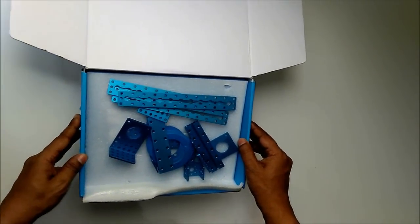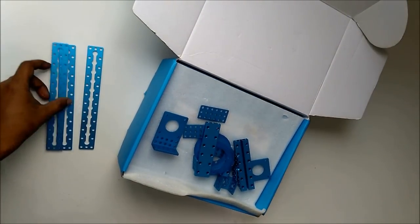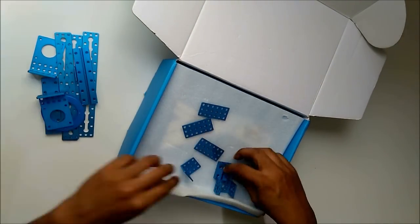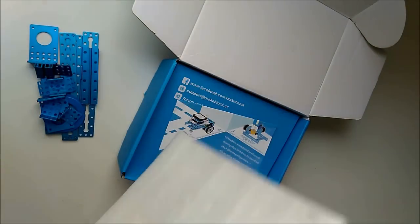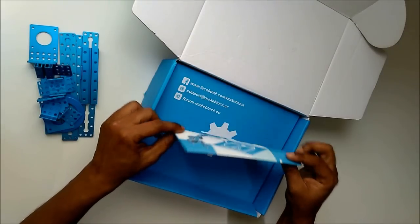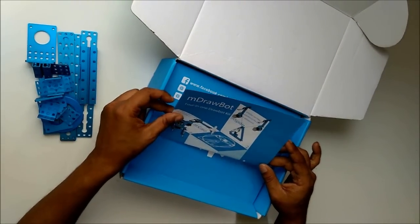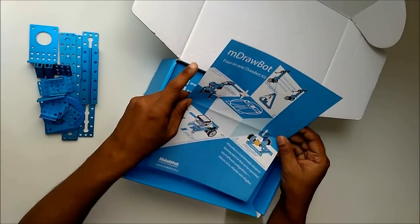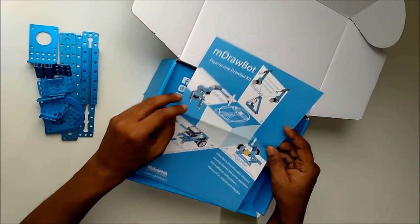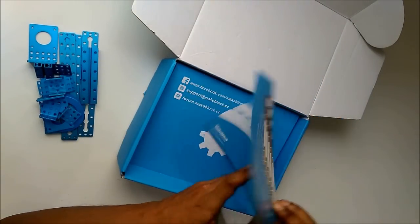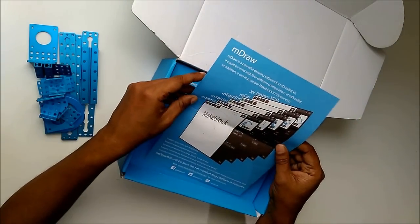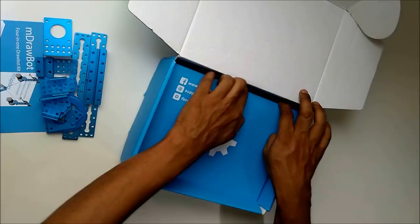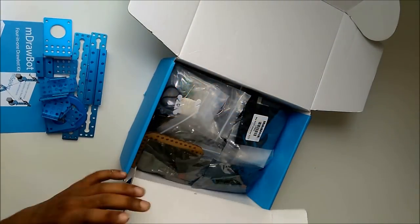Inside a small piece of paper which is about the mDraw board. There are four types of robots you can make from this kit. The backside is talking about the mDraw software which you need to run this robot. Inside are lots of mechanical parts.